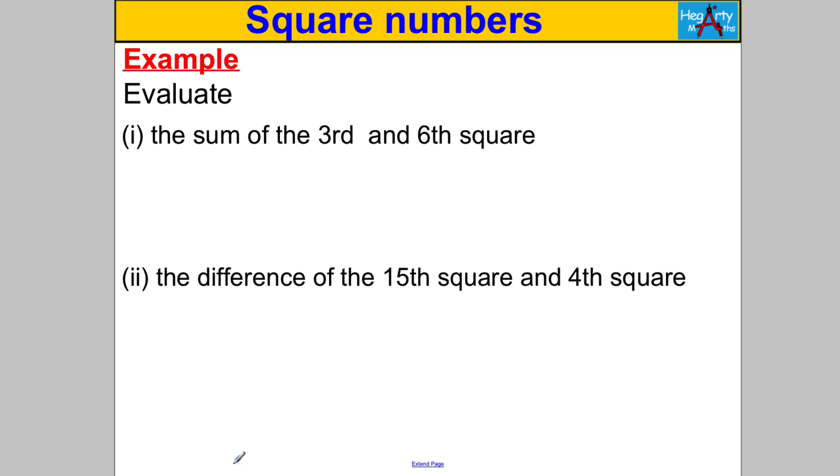Evaluate the sum of the third square and the sixth square. The third square is 3 times 3 which is 9, the sixth square is 6 times 6 which is 36. They've asked us to work out the sum, and sum means to add them. So if we add 9 and 36 we get 45.